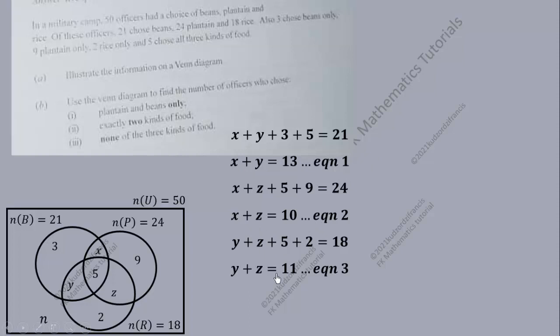Now we solve equations 1, 2, and 3 simultaneously. This is straightforward because all coefficients are 1. Using elimination, we subtract equation 2 from equation 1: x minus x is 0, y minus z remains, and 13 minus 10 gives 3. So we get a new equation 4: y minus z = 3.